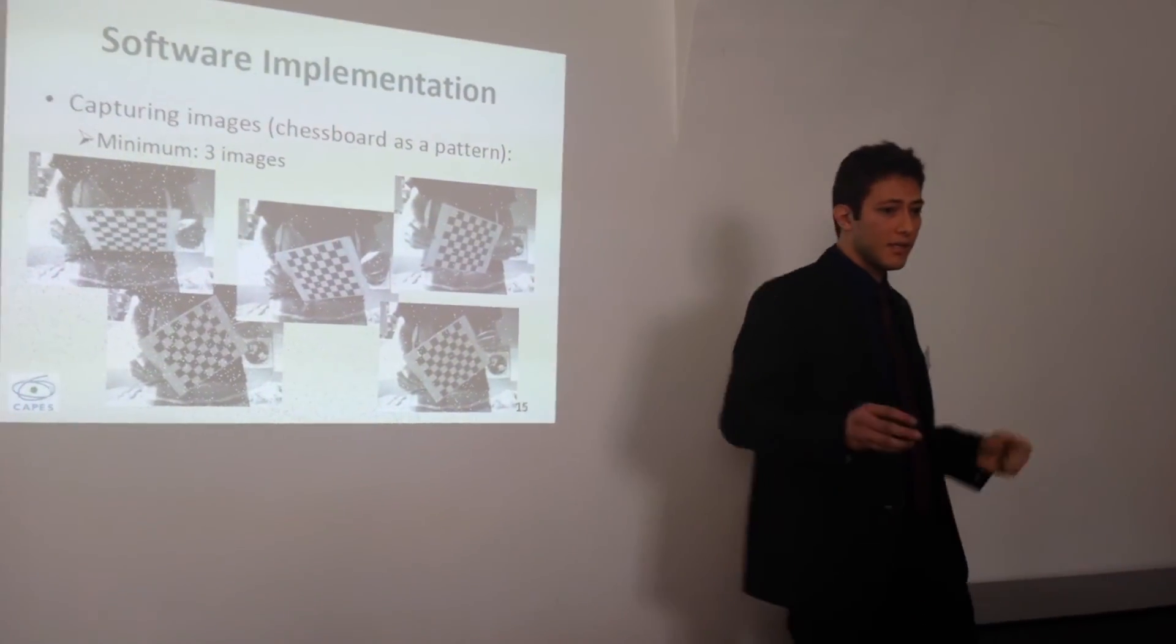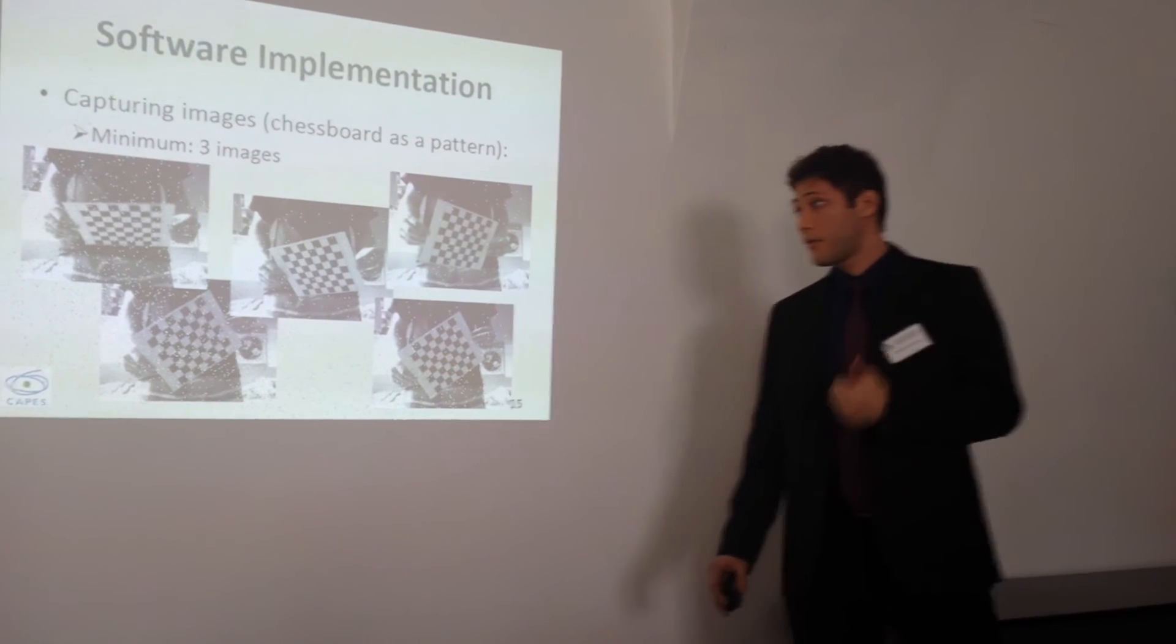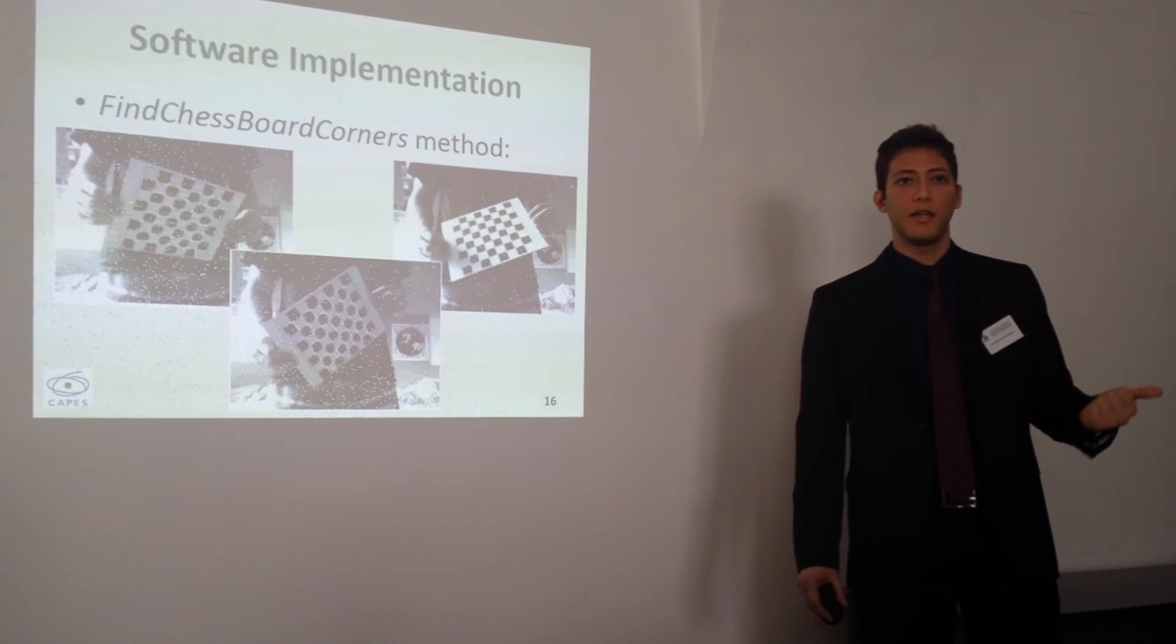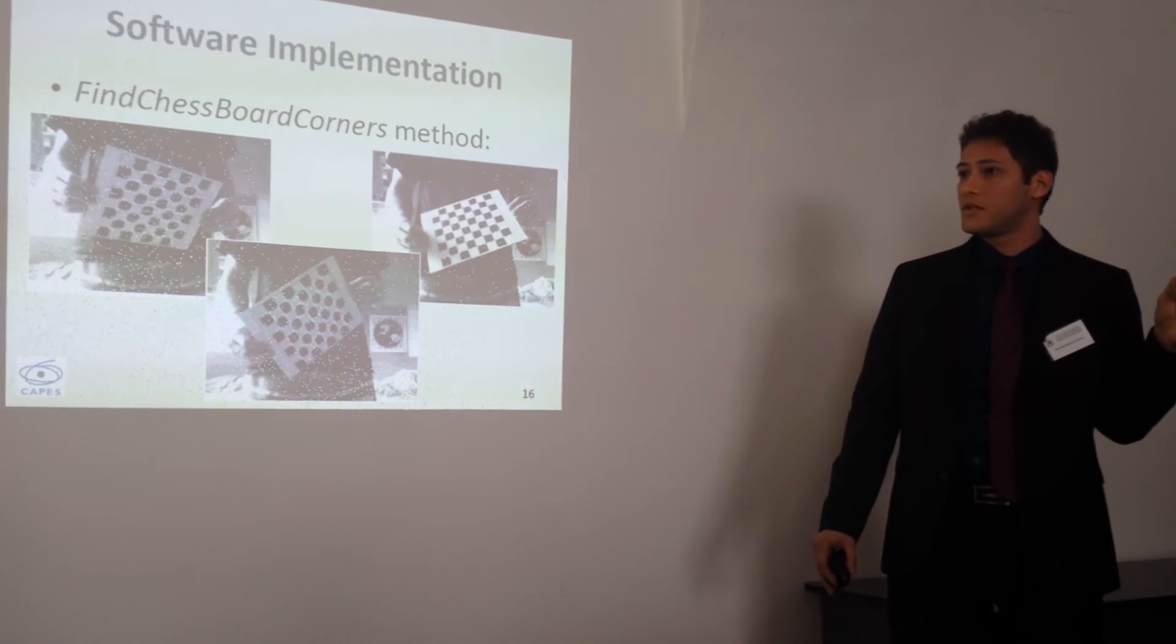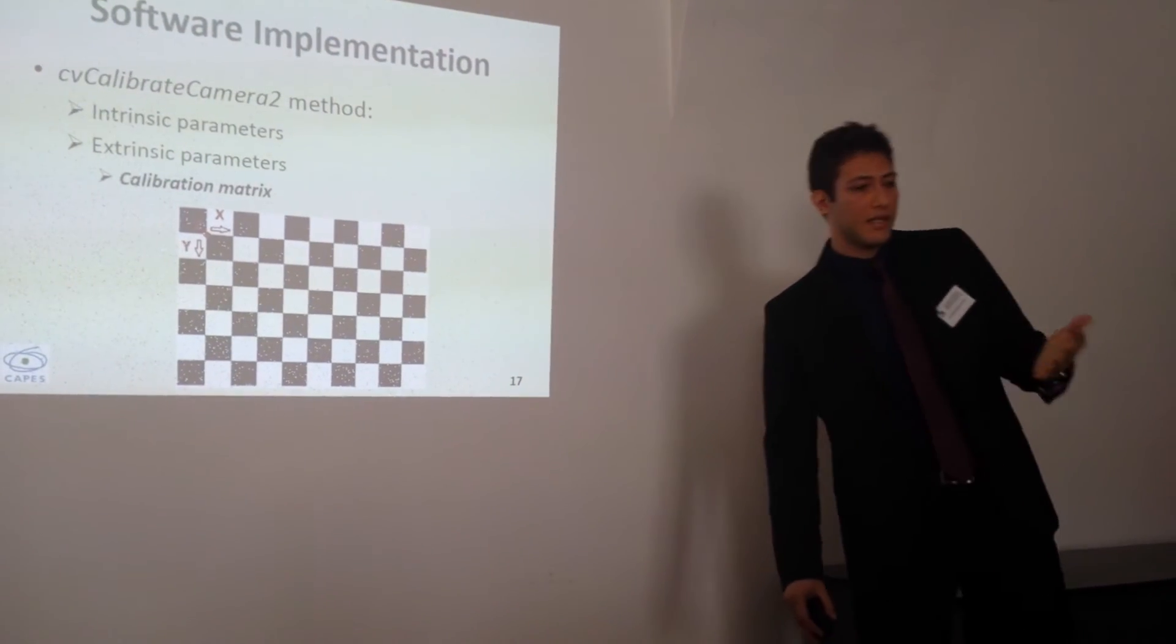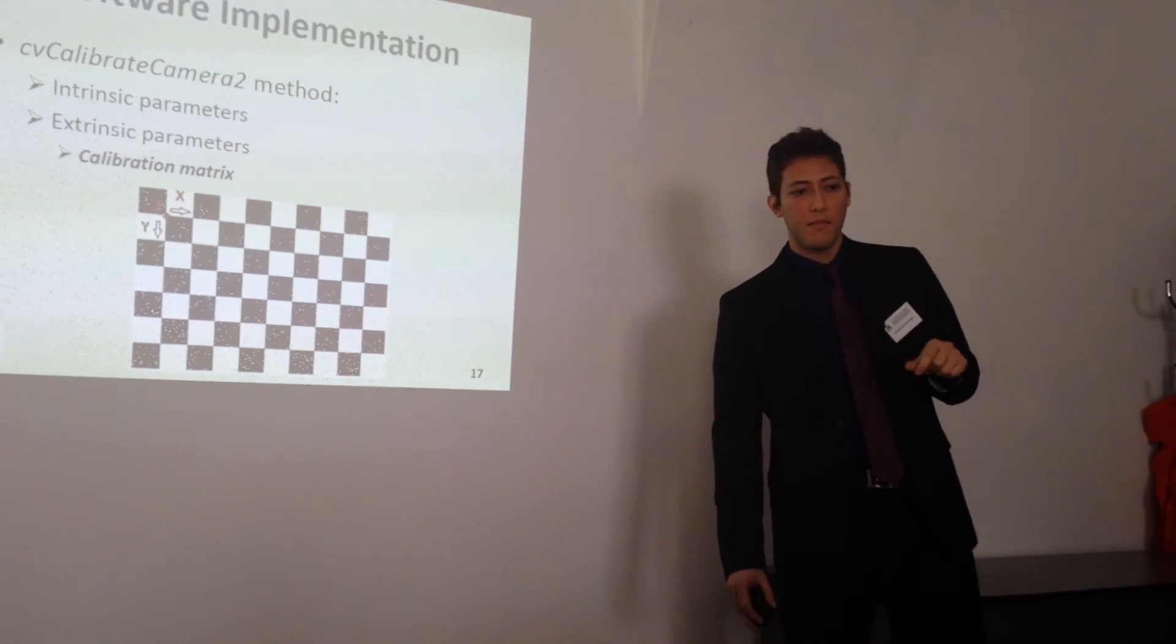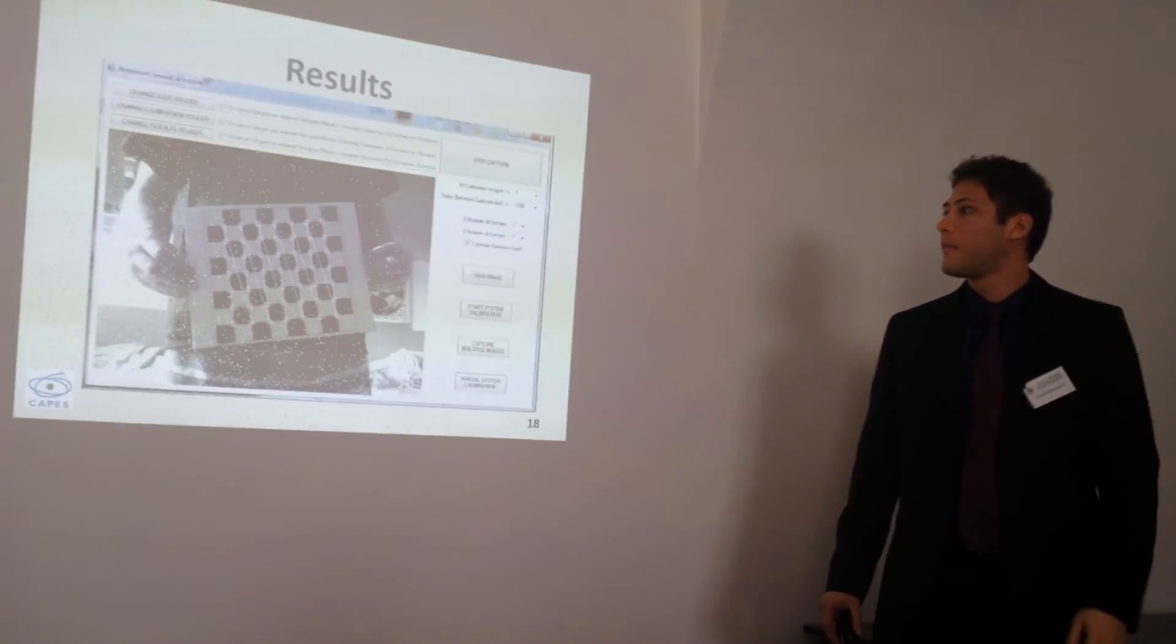First of all, you have to capture the images. The minimum number of images is three, but I choose between seven and twelve images. After that, you have a nice method called FindChessboardCorners that is provided by OpenCV. You will have the 2D points of the chessboard corners. With this information, you use the CalibrateCamera tool and it will calculate the intrinsic parameters and the extrinsic parameters. The main frame is positioned in that corner, and that will be the reference frame.